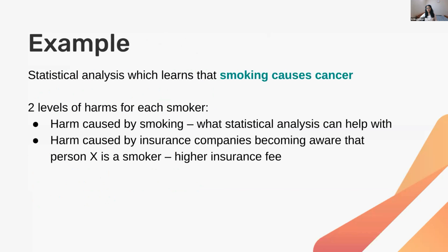Consider an example: using cancer data to predict whether smoking causes cancer. There are two levels of harm. The first is the harm caused by smoking itself, which statistical or machine learning analysis can help address by finding the strong relationship. The second level of harm is if you participated in such a dataset — insurance companies could learn that you're part of a smokers' dataset and charge you a much higher premium. That's what privacy breaches can cause.